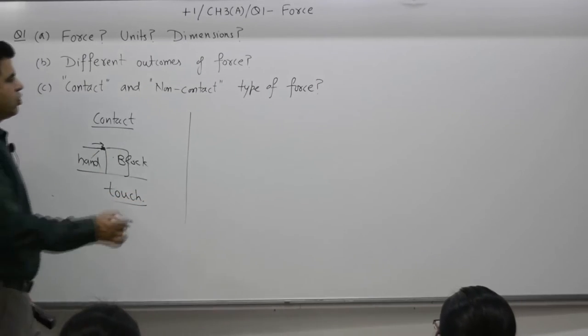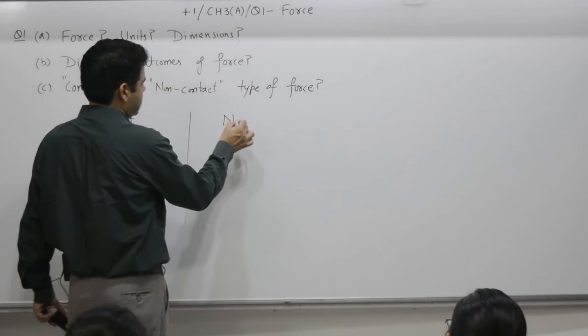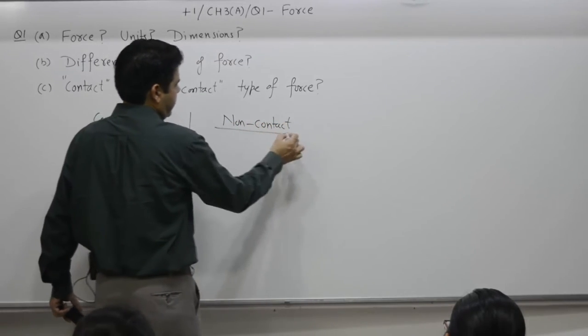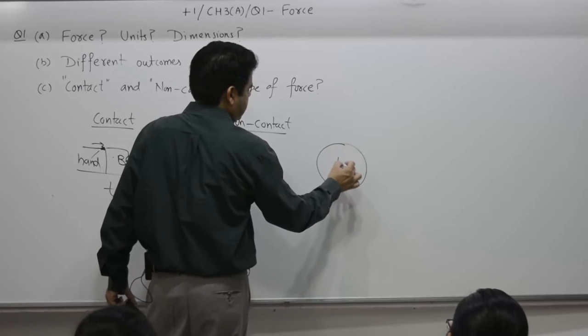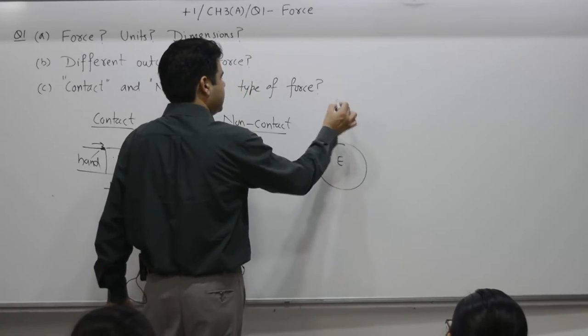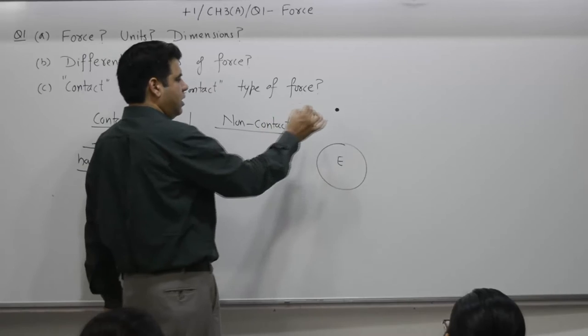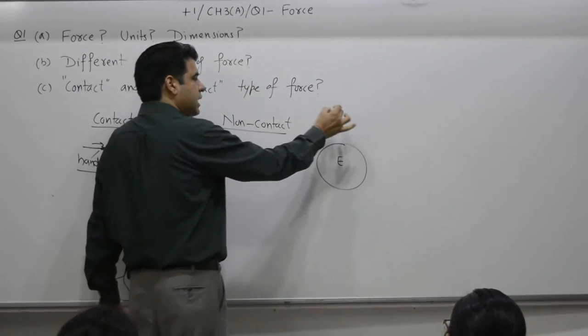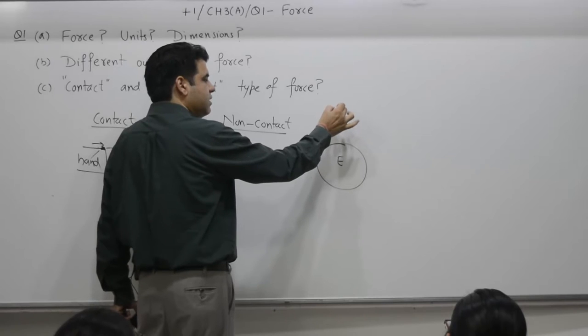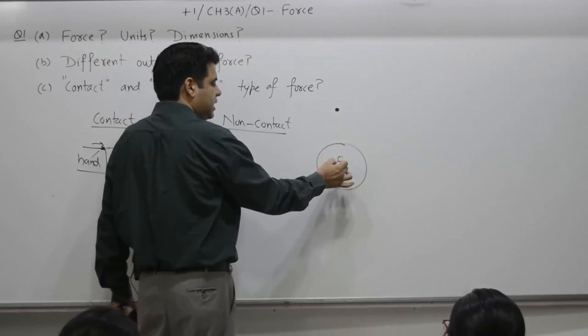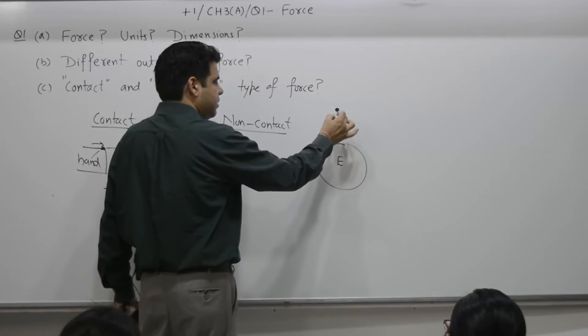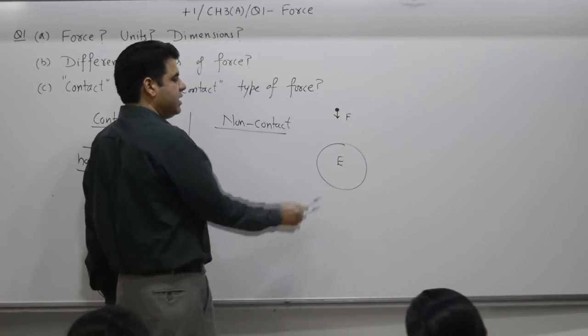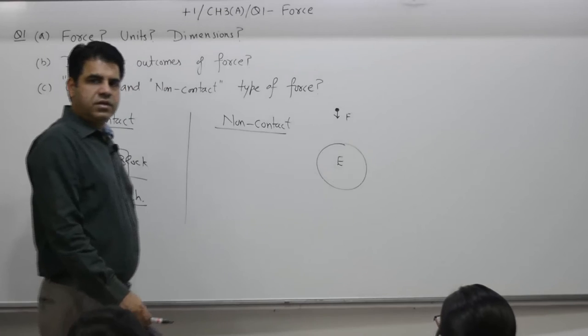Number of examples are there. Earth and a ball at a certain height, or a moon at certain distance, certain height. This ball is being attracted by Earth because of force of gravity, even at certain distance. That is one example.